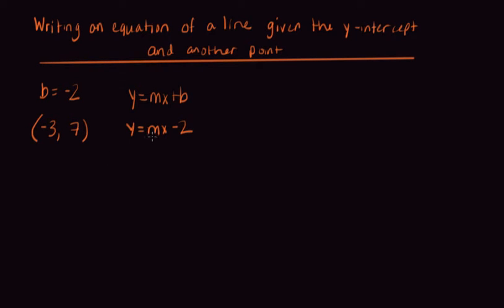Then we need to find m, but we don't know m, but we do know x and y, or at least one x and one y. So this could be x1, y1. So we can actually plug this in for x and plug this in for y and use that to find m.